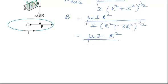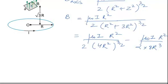So we can take 2, 4R² to the power 3/2 can be written as μ₀I times R². So the final value of magnetic field on the axis at a distance root 3R will be given by μ₀I upon 16R.